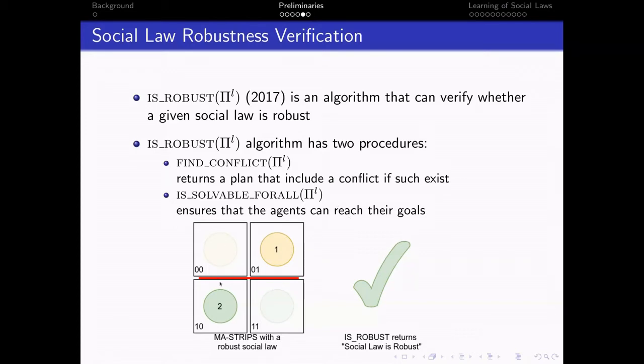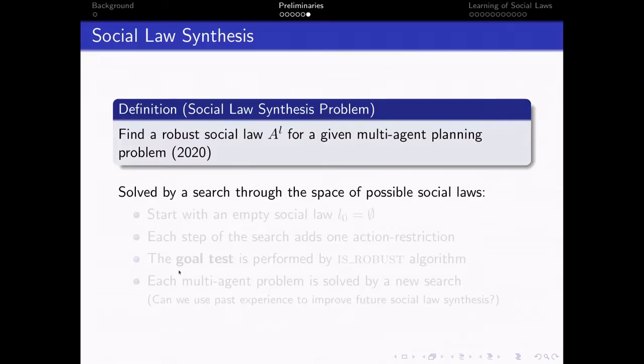The second procedure checks and ensures that the agents can reach their goal. For instance, for the social law, for this simple social law, the IS-ROBUST algorithm will return that the social law is robust.